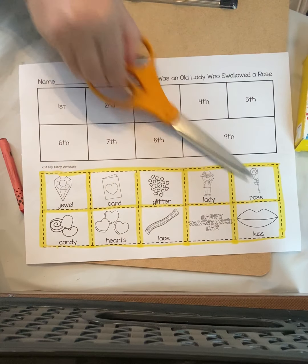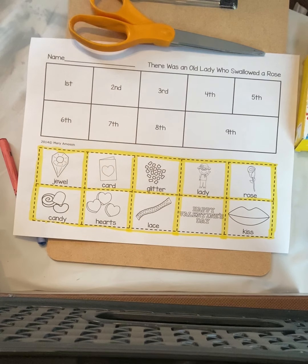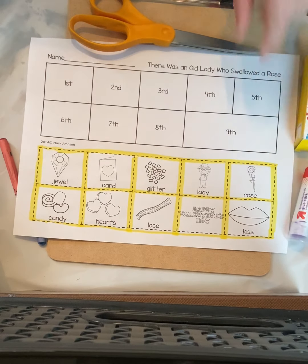Hi friends! Today we're going to be working on our old lady sequencing page. So you're going to need some scissors, your crayons, and your glue. So here we go.